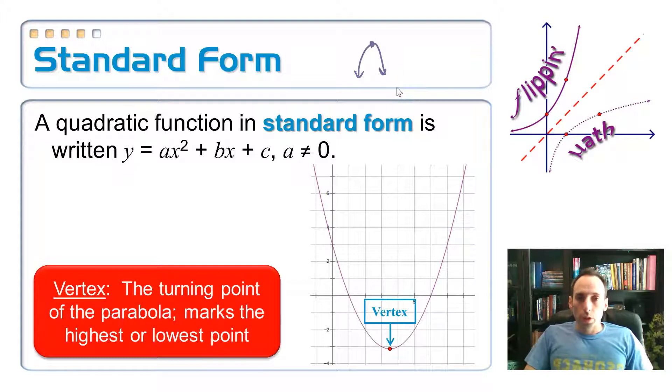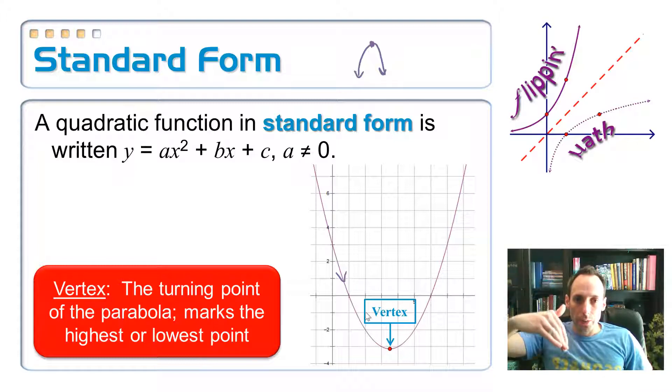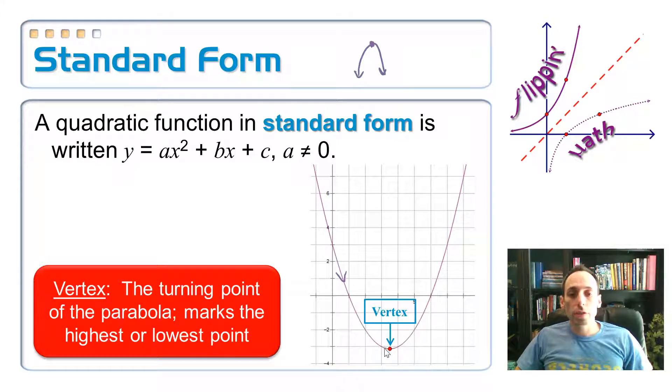So it's called a turning point because if you look from left to right, right now your parabola is decreasing - the values are going down, down, down, down, down until it reaches the vertex, and then it turns and starts going up, up, up and starts increasing.